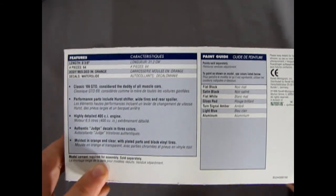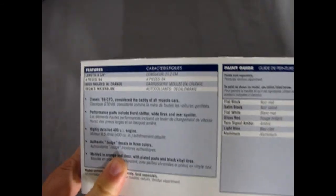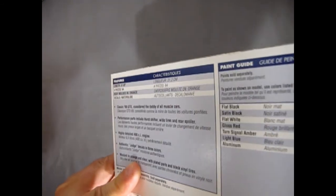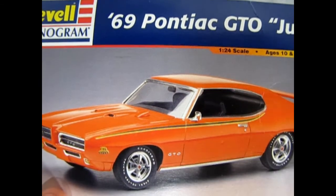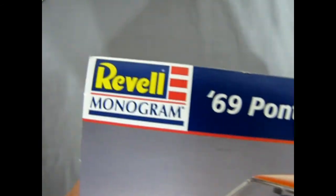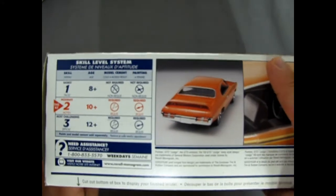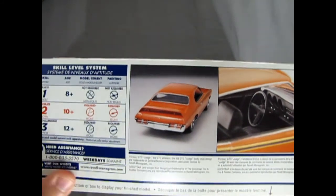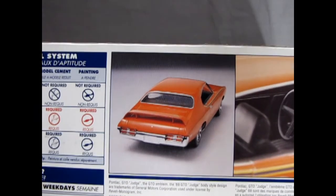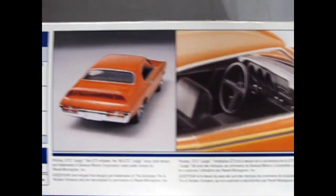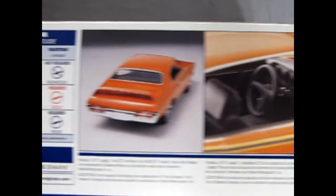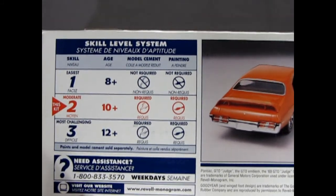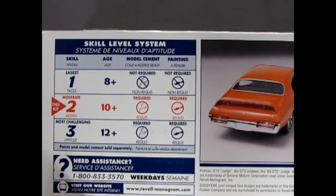Now I might have taken the decals out and put them to the side back in the day and then we got the high river flood and I lost my entire decal box which is unfortunate. I had some stuff in there from Denmark. The end of the box looks like the front. There's the back end of the built-up 69 Pontiac GTO. And our interior. This kit is for ages 10 and up, skill level 2, needs glue and paint.